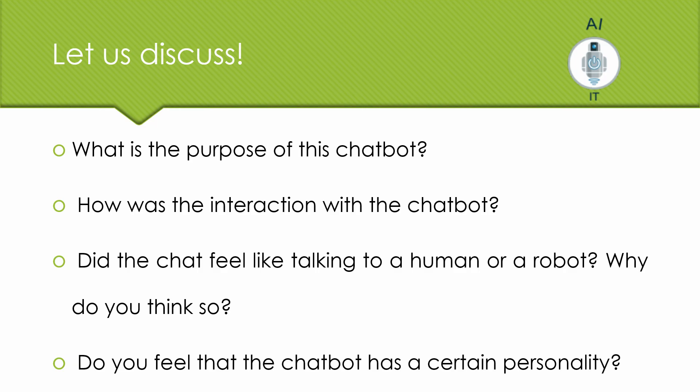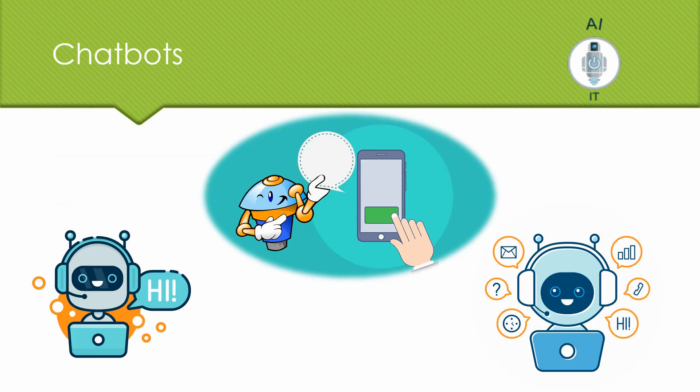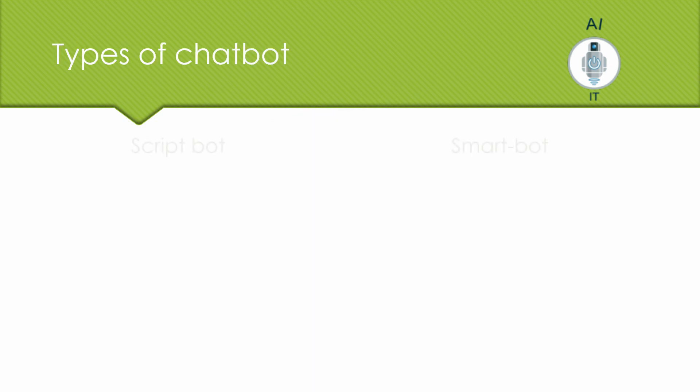Let us understand that there can be two different types of chatbot. One is your scriptbot and the other one is your smartbot. Scriptbots are very, very easy to make. Whereas, your smartbots are flexible and powerful. If you take scriptbots, they are programmed around a script that is programmed in them.